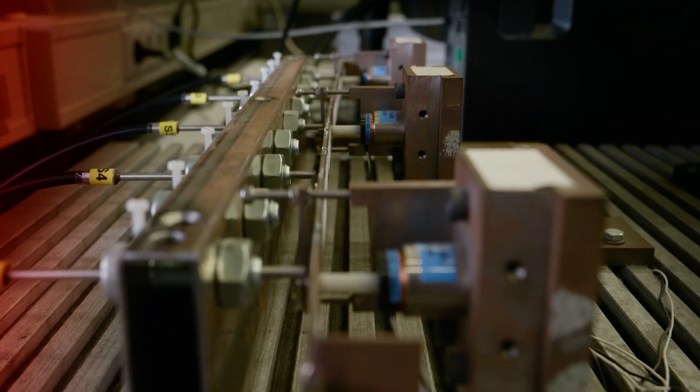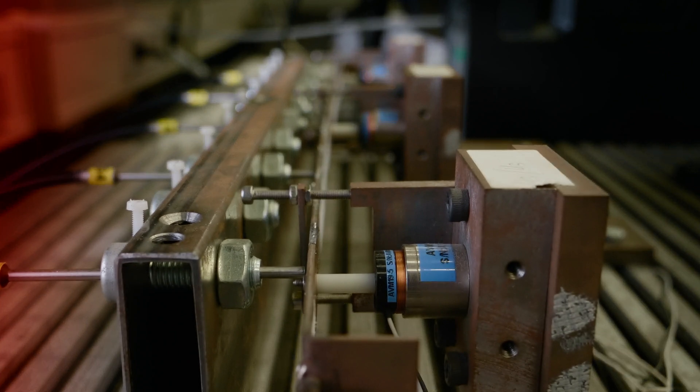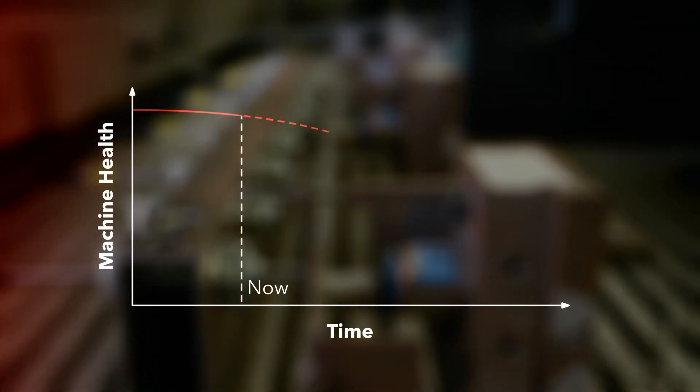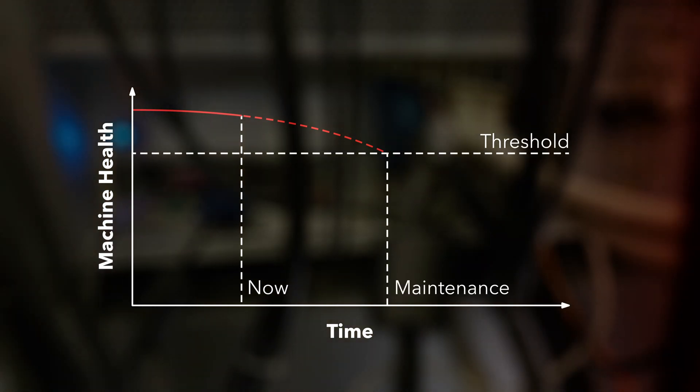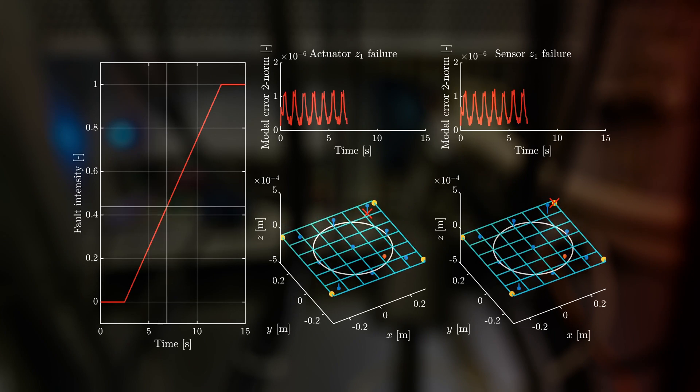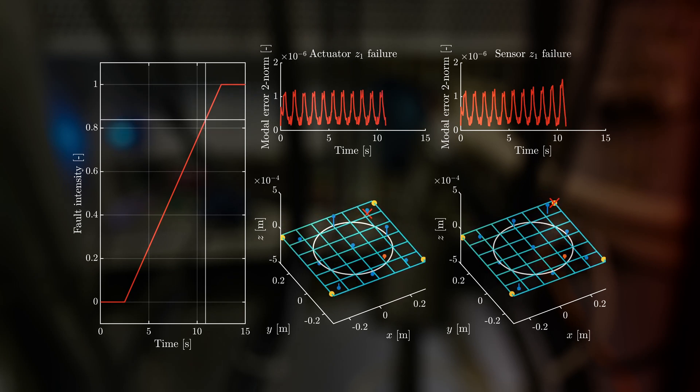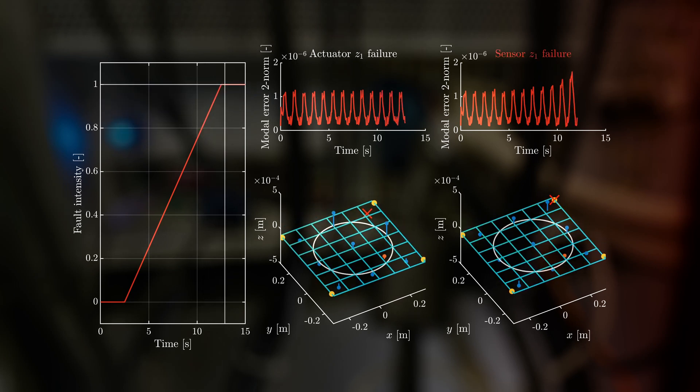After successful fault detection, several strategies are pursued. Firstly, faults are repaired through optimally scheduled maintenance using predictions from FDI data. Secondly, self-healing machines are developed where the control system actively compensates the fault, for instance by allocating the control inputs over the remaining healthy components.